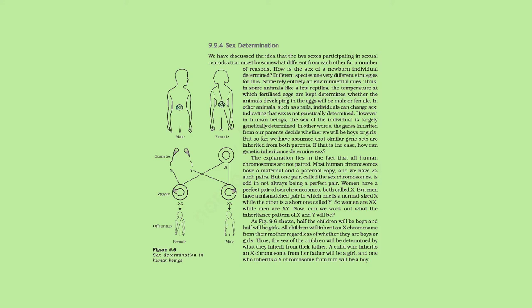If similar gene sets are inherited from both parents, how can genetic inheritance determine sex? The explanation lies in the fact that not all human chromosomes are perfectly paired. Most human chromosomes have a maternal and paternal copy, and we have 22 such pairs. But one pair, called the sex chromosome, is odd in not always being a perfect pair. Women have a perfect pair of sex chromosomes, both called X. But men have a mismatched pair — one normal-sized X and one short chromosome called Y. So women are XX while men are XY.